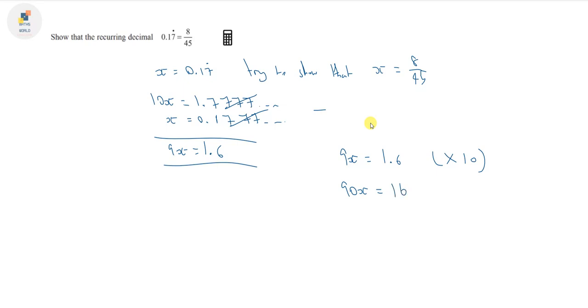If we rearrange this equation to make x the subject, we can do that by dividing both sides by 90. So we get x equals 16 over 90. You might be thinking, well hang on, this isn't the same as 8 over 45. But if you notice, yes it is, because you can simplify this fraction. You can do that by recognising that 16 and 90 are both even numbers, so we can divide both the top and bottom by 2. 16 divided by 2 is 8, 90 divided by 2 is 45. Since x is equal to 0.17 recurring, we know that x equals x, so 0.17 recurring must be equal to 8 over 45.